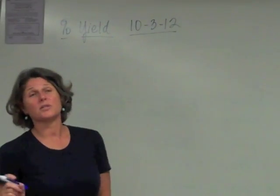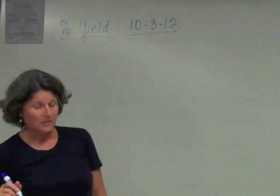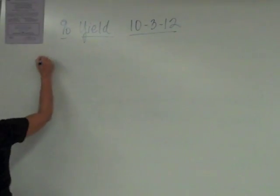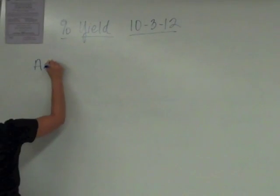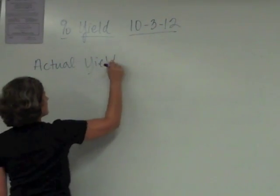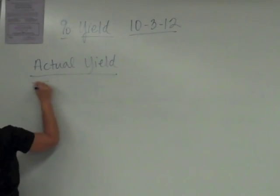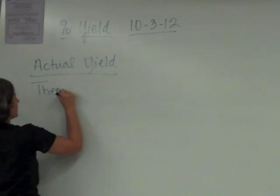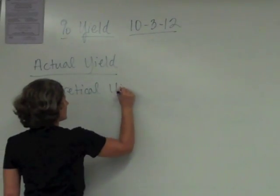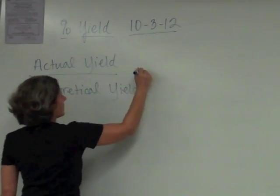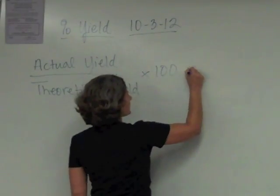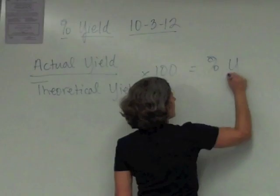So what is percent yield? To calculate percent yield, you take the actual yield divided by the theoretical yield and multiply that whole thing by 100, and that will give you the percent yield.